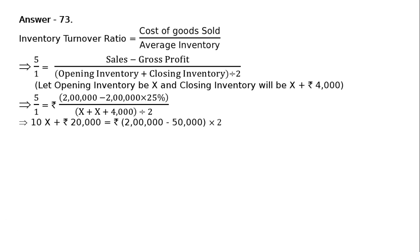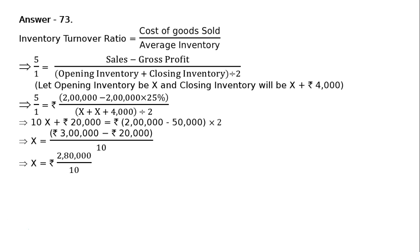By cross multiplying, we get rupees 2 lakhs minus rupees 50000 (i.e., 25% of 2 lakhs = 55000), whole into 2. Solving further, opening inventory x equals rupees 2 lakh 80,000 divided by 10, giving opening inventory x equal to rupees 28,000.